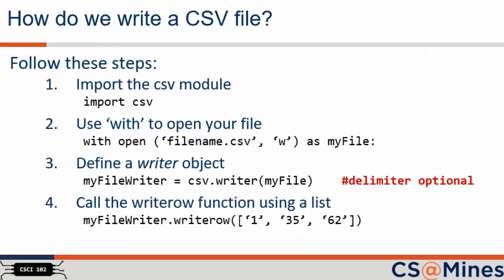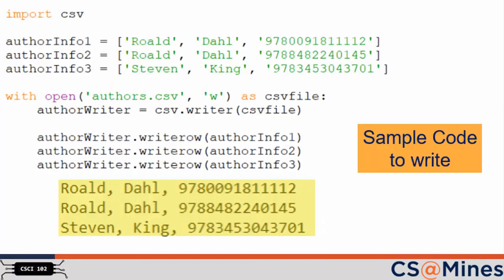Let's now talk about writing a CSV file. Writing a CSV file follows similar steps. The key differences are: first, we need W mode instead of R mode in Step 2. Second, a writer object is declared instead of a reader object in Step 3. The delimiter parameter for the function is optional — if the delimiter is not included, a comma is used as the default. Lastly, in Step 4, the file is written to instead of read from. To write to a CSV file, you write one row at a time. Notice how the row you write with the writerow function is a list. In this example, the three lists — author_info_1, 2, and 3 — are written to the file authors.csv.